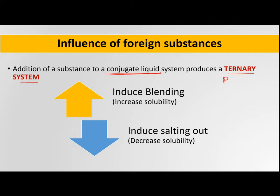For example, in the phenol-water system, if we add sodium chloride — a very strong electrolyte with very high solubility in water but very low solubility in phenol — its addition will reduce the miscibility of phenol and water. It will instruct phenol molecules to leave the water molecules, and more and more water molecules will be taken up by sodium chloride because of its higher solubility in water.